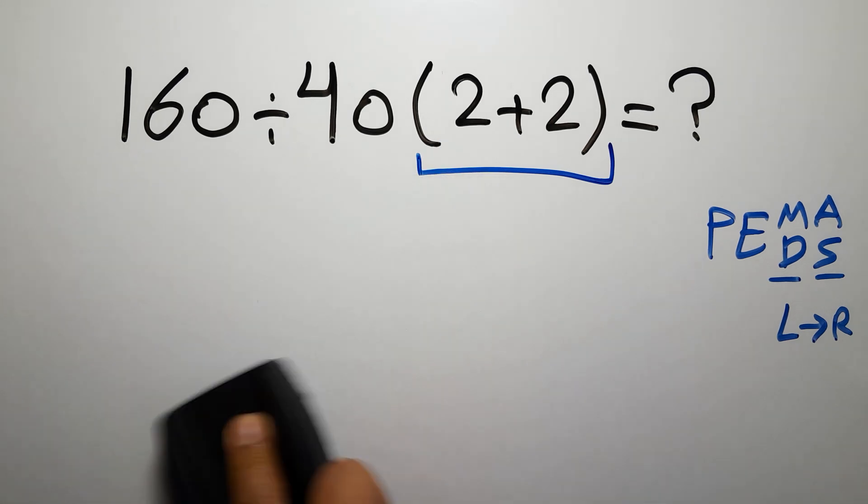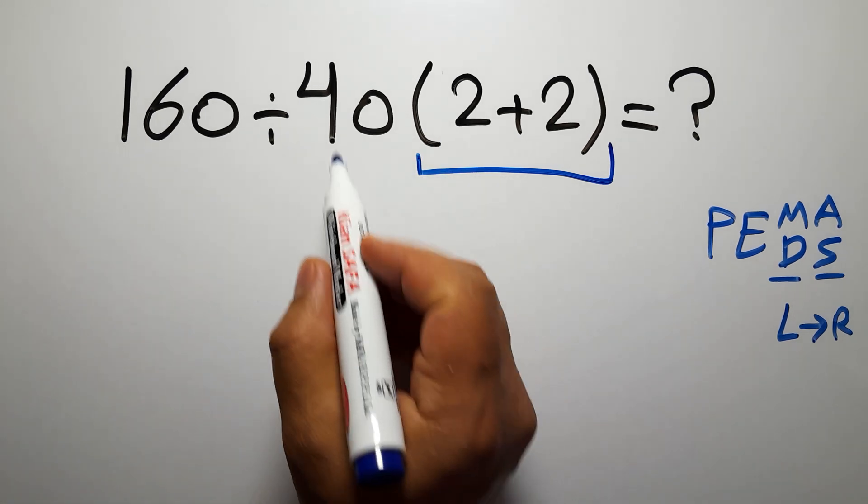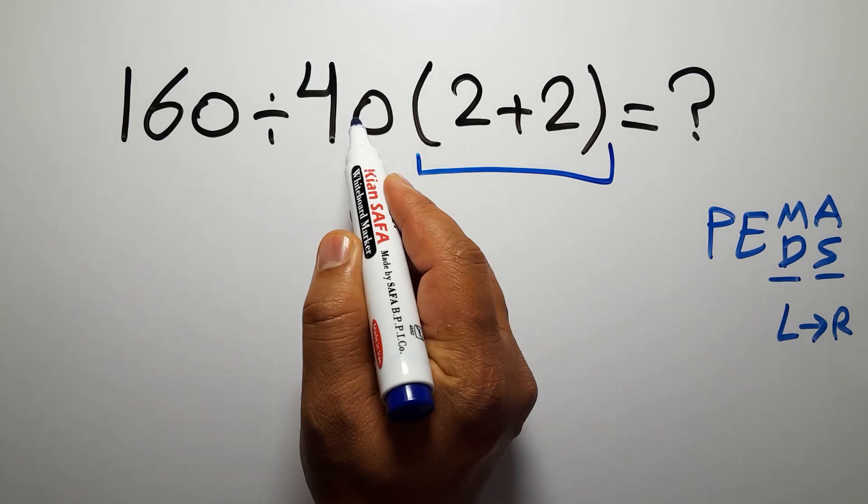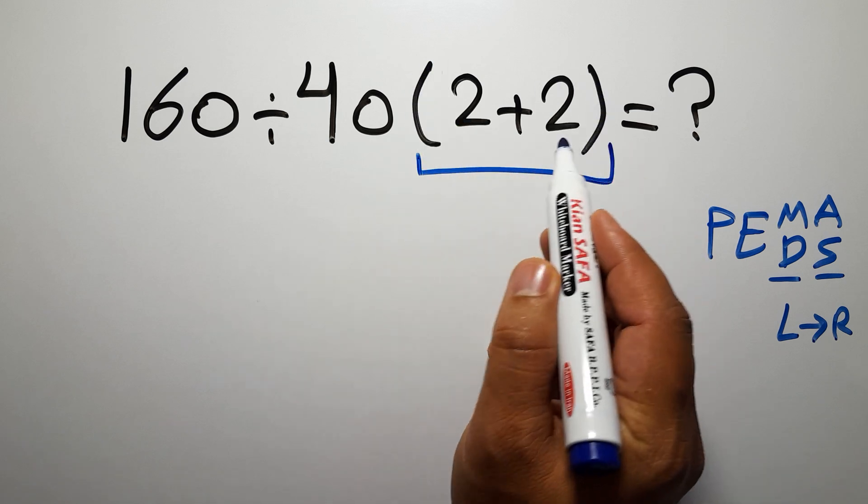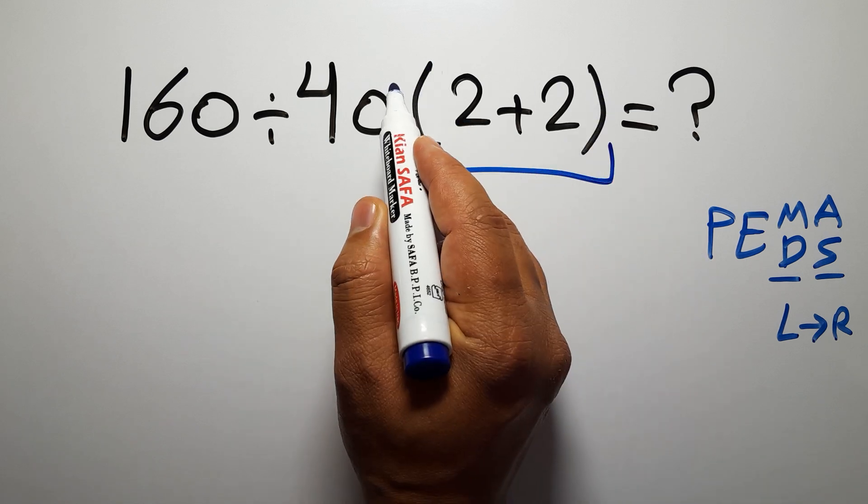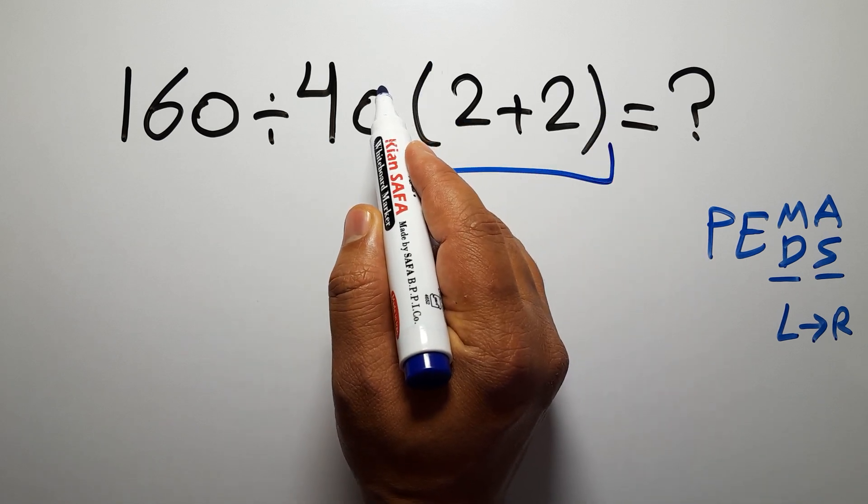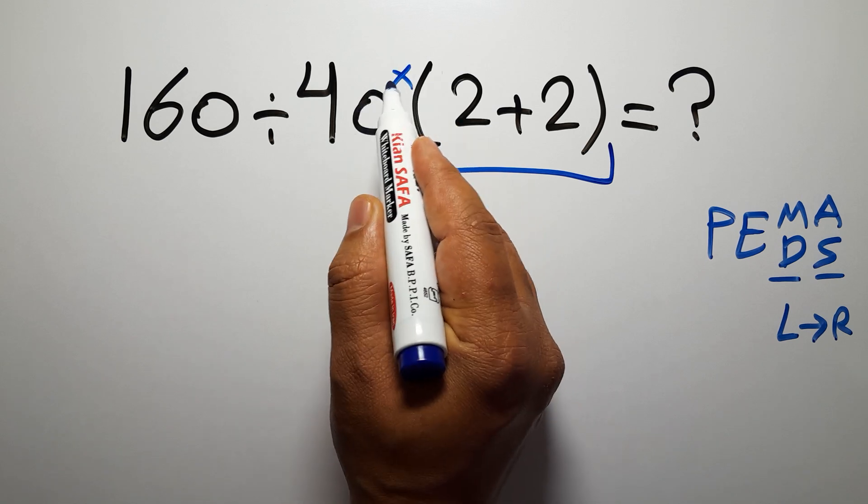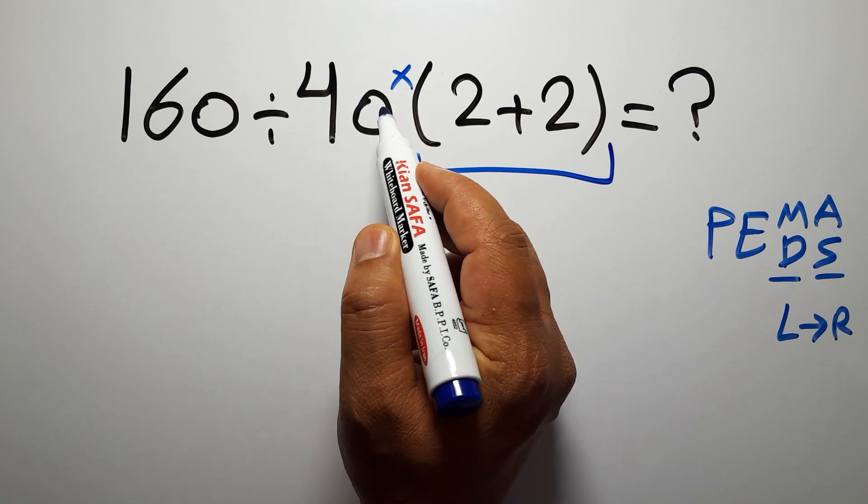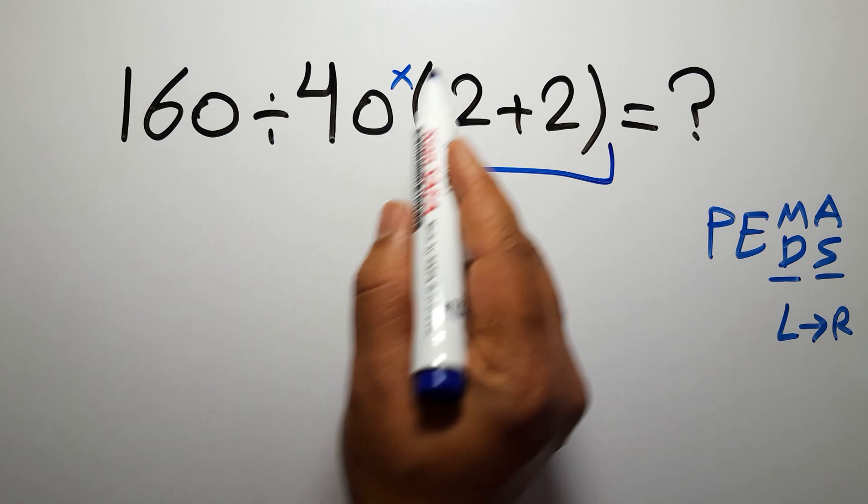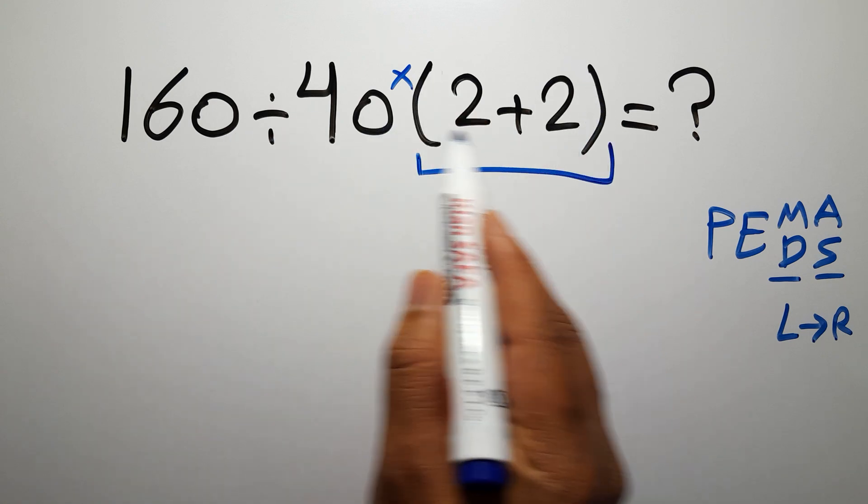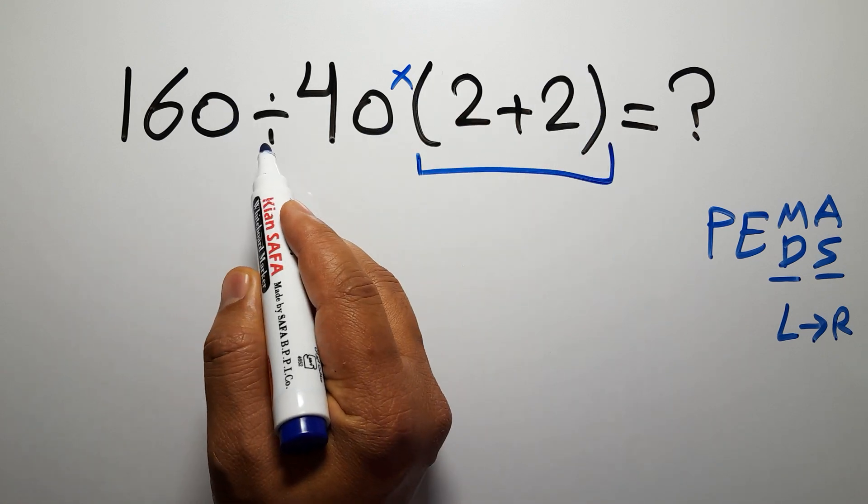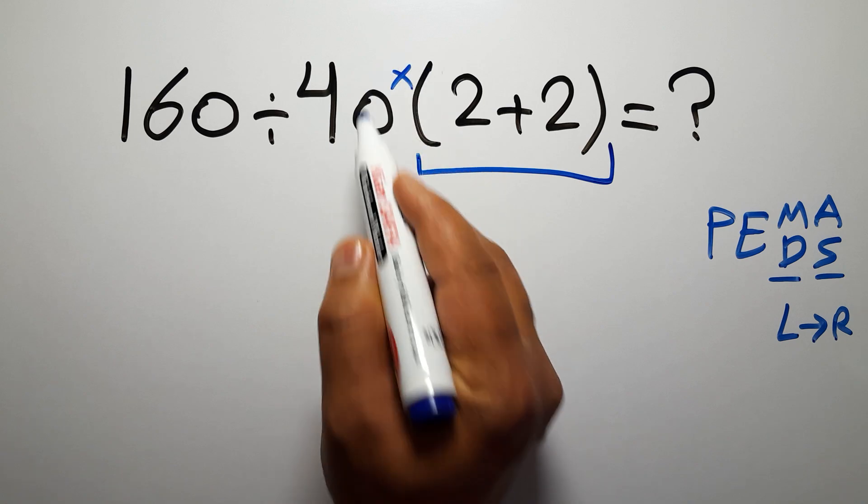We need to pay attention that when a number is placed next to parentheses, it means multiplication. And we usually don't write the multiplication sign for brevity. So here we have a multiplication. So after these parentheses, we have to do this division, and finally this multiplication.